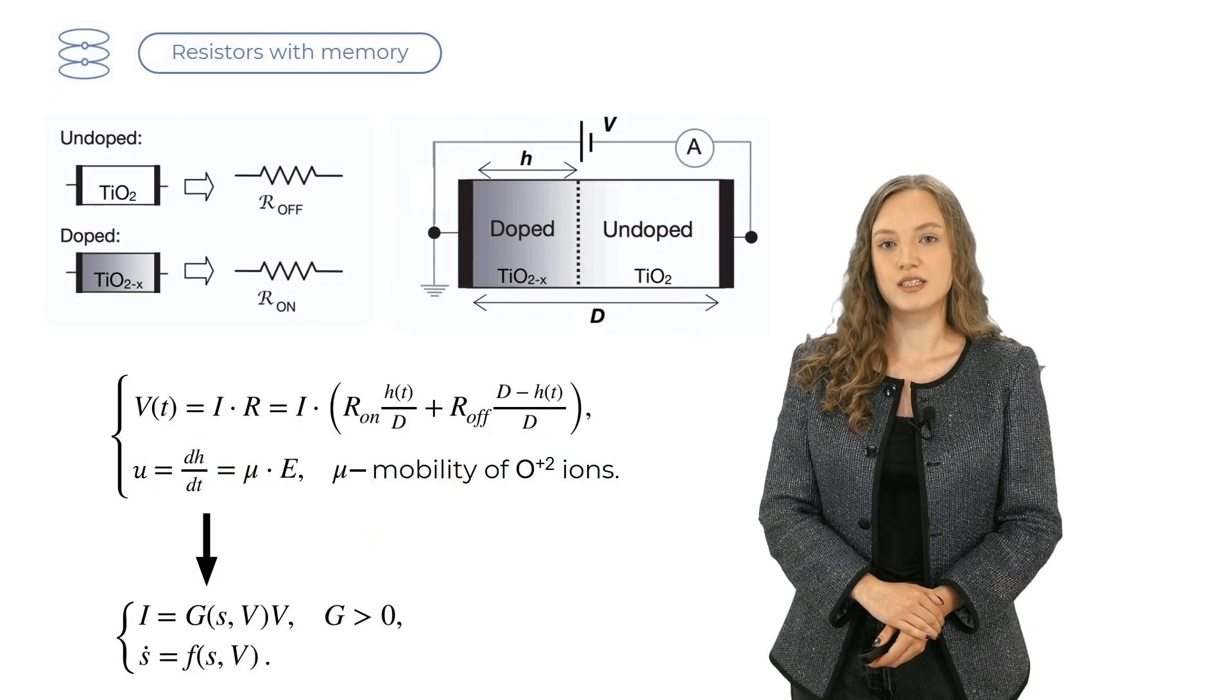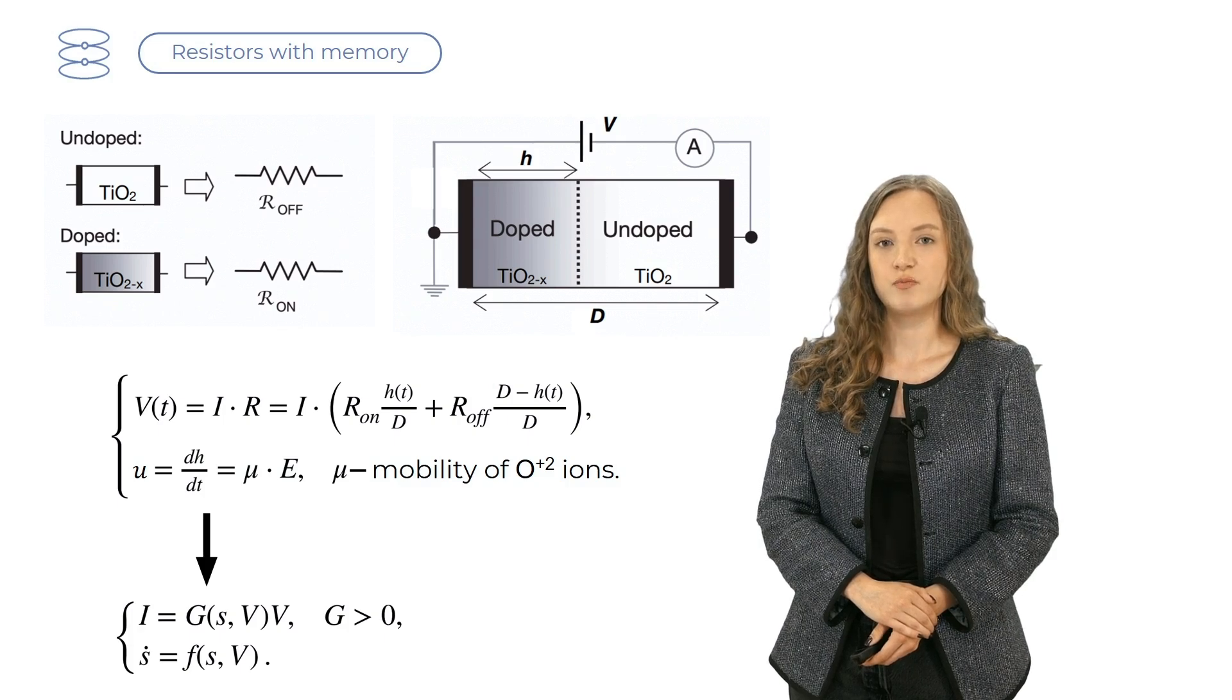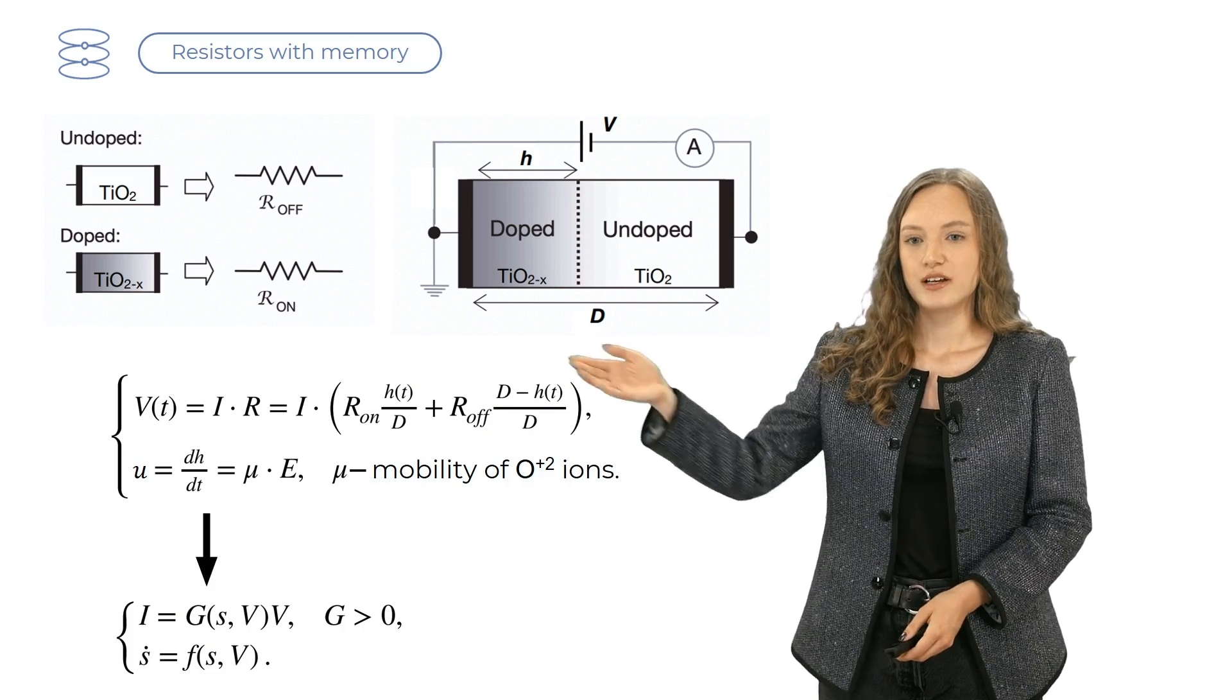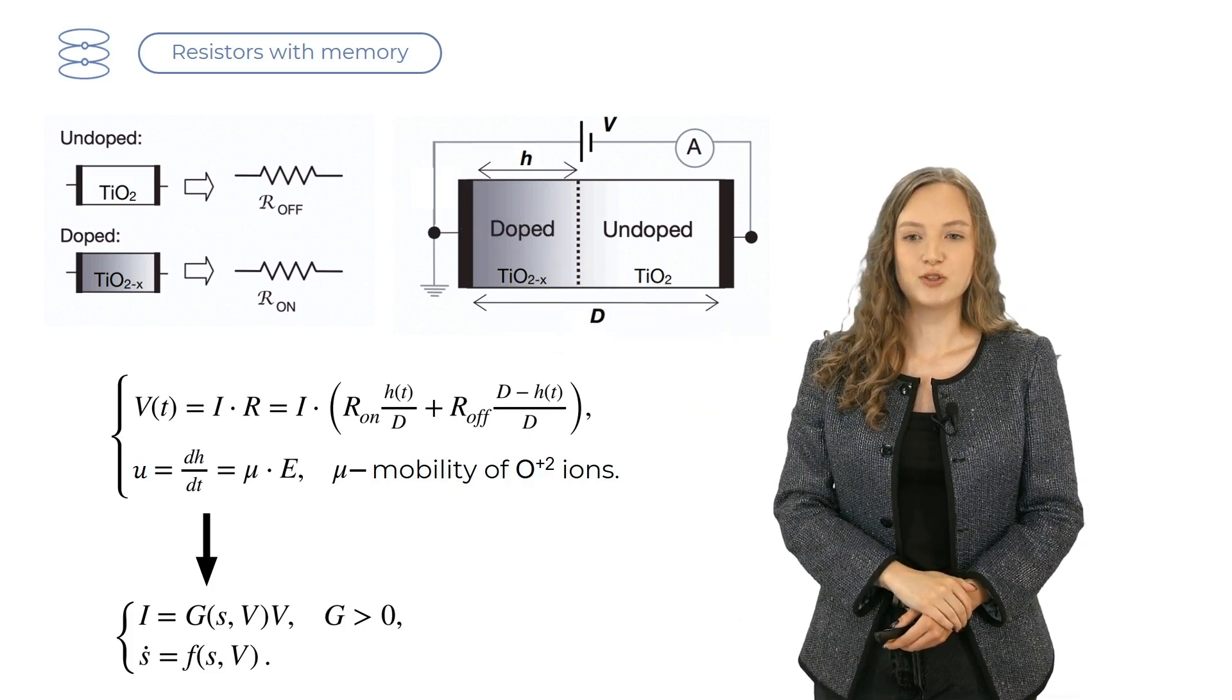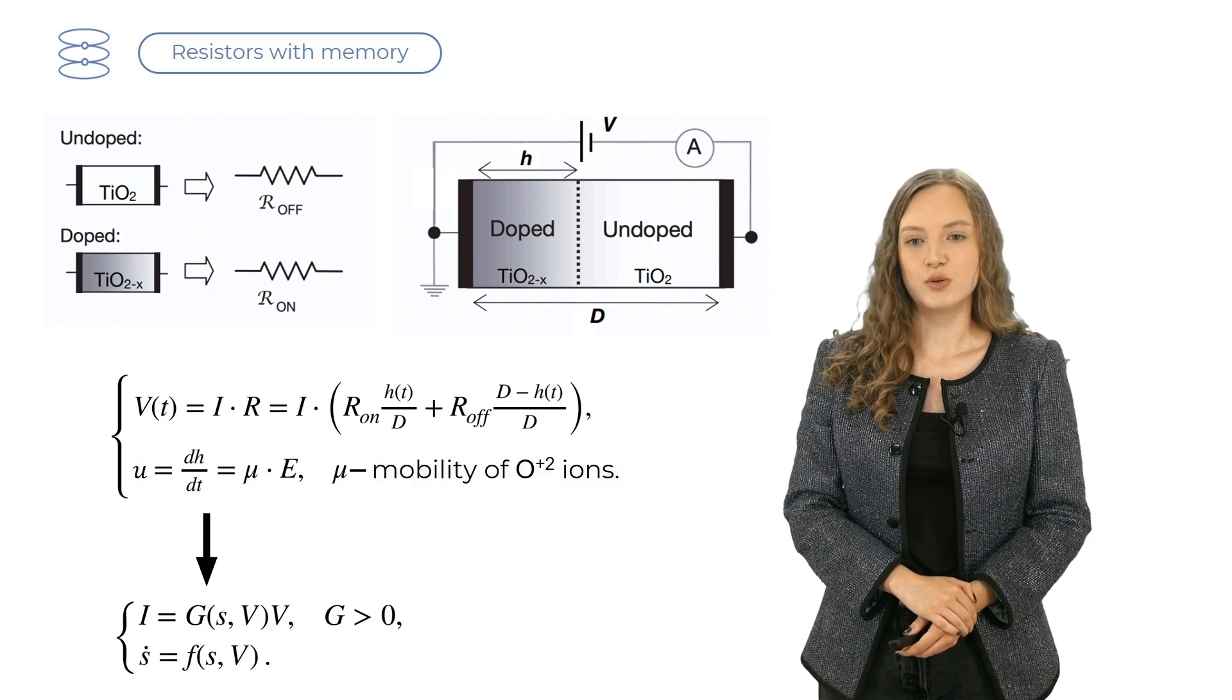Let's consider a simple memristor, one from Strukov's work, which is just a titanium oxide film between two electrodes. When the applied voltage is zero, the whole film consists of TiO2 molecules, and the resistance is very high, equal to R_off.